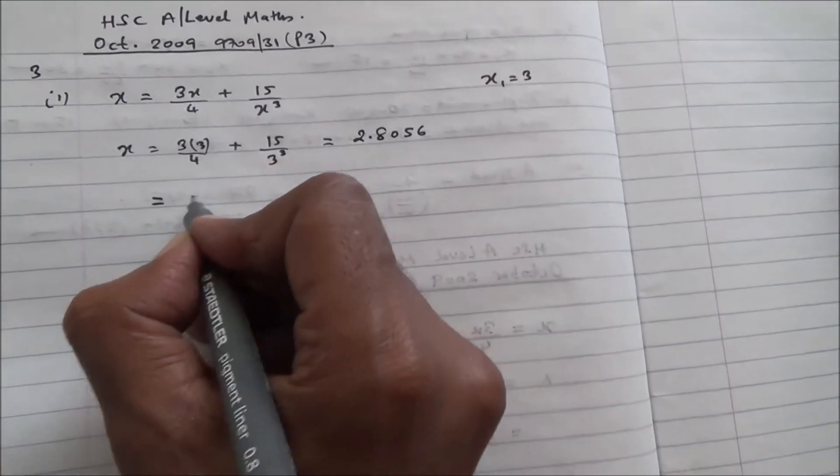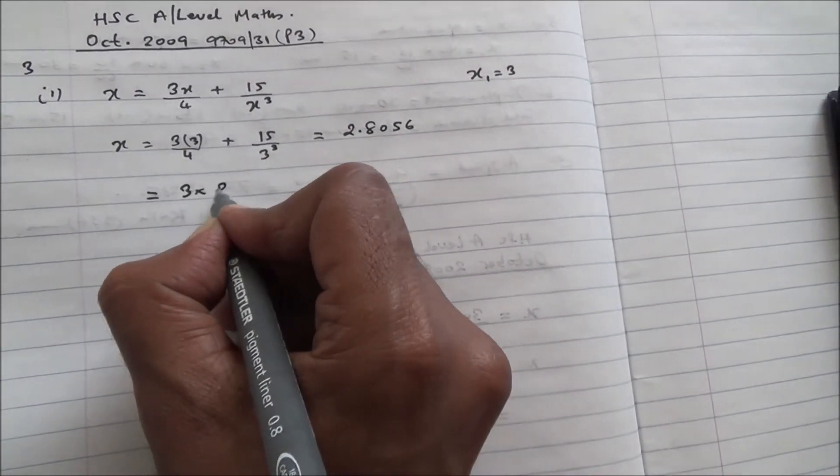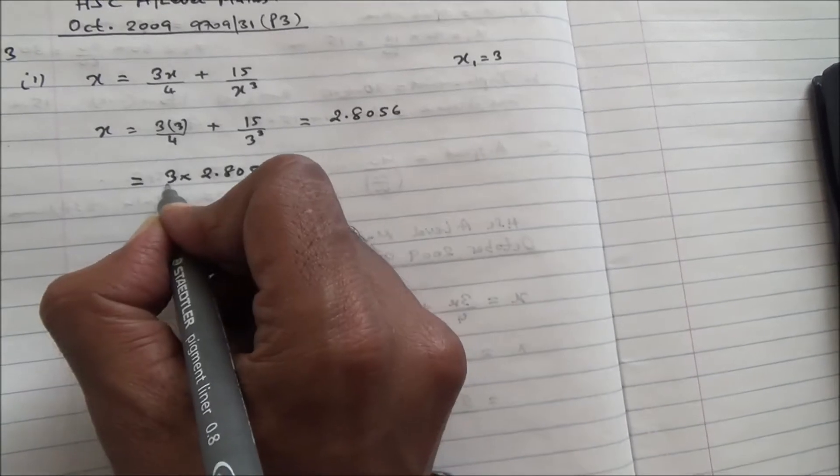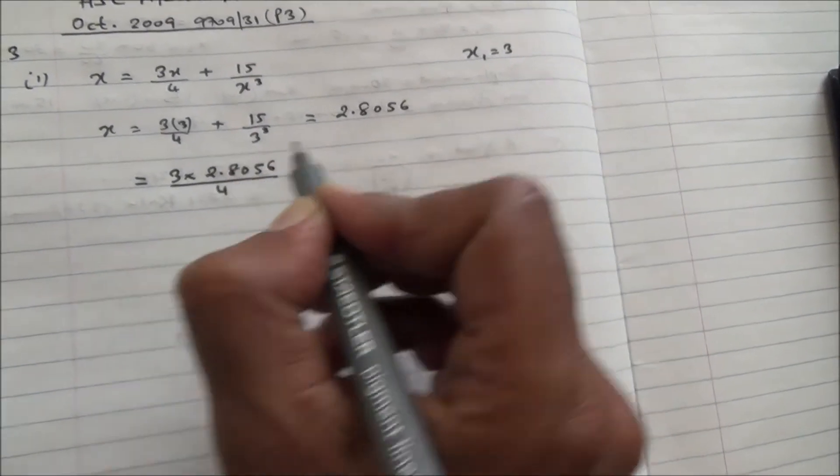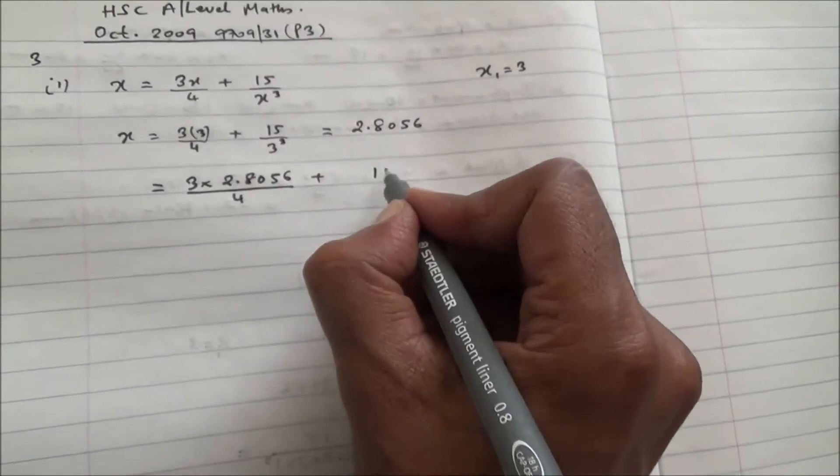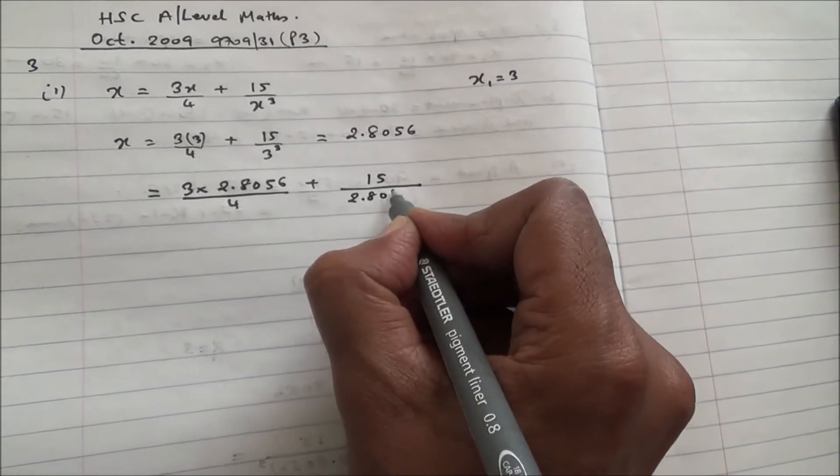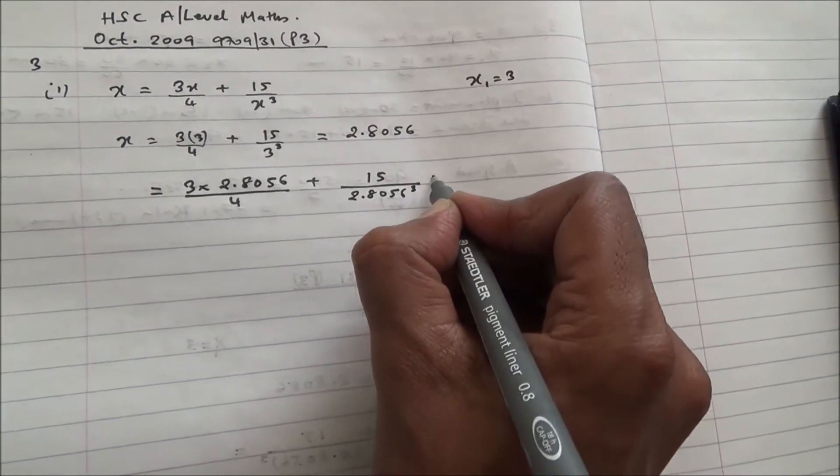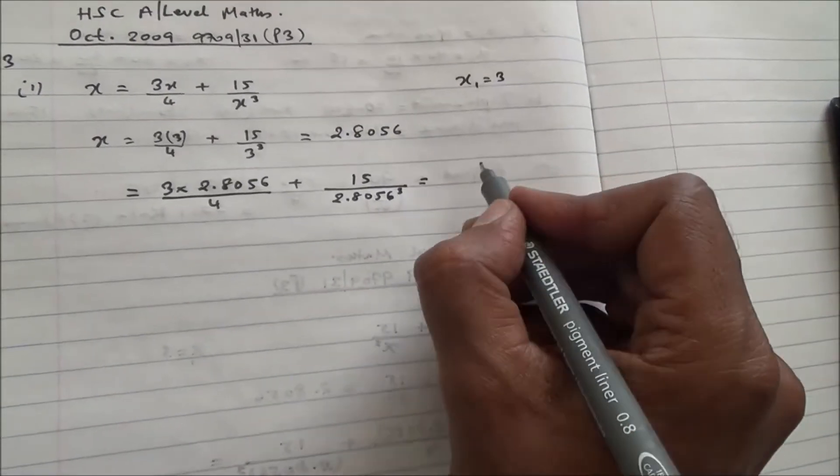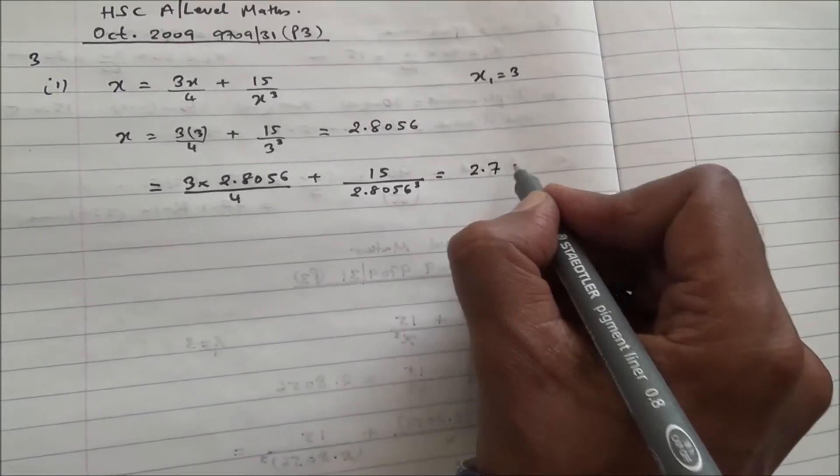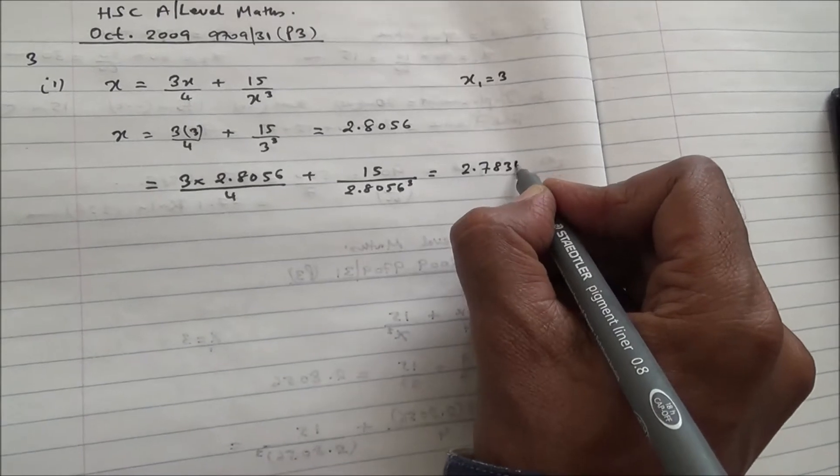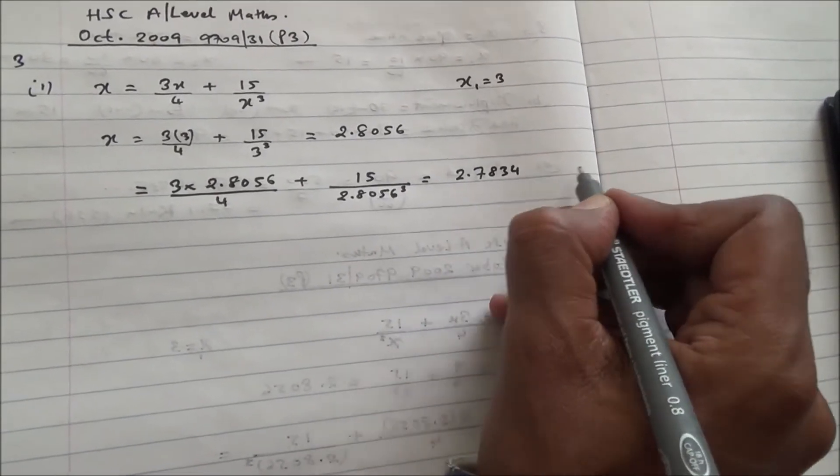The next value is going to be 3 times 2.8056 divided by 4 plus 15 over 2.8056 to the cube. And if you were to work this one out, you're going to get 2.7833 something, 3, 3, 5 and something.